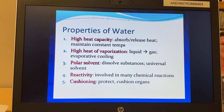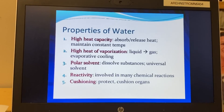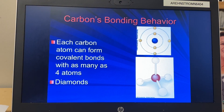To summarize, you should know the difference between the types of chemical bonds discussed: covalent, ionic, and hydrogen bonds. In the next lecture, we're going to start talking about carbon.